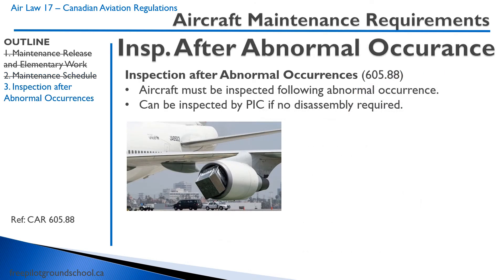After an abnormal occurrence, you have to inspect the aircraft. It's usually done by an aircraft maintenance engineer, but the pilot in command can do it if there's no disassembly required. So if something abnormal happens and you just need to look at a flap or check for external damage, you're allowed to do that as pilot in command as well.